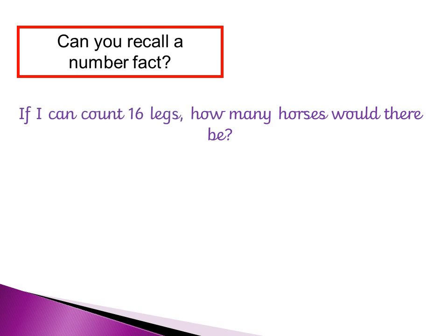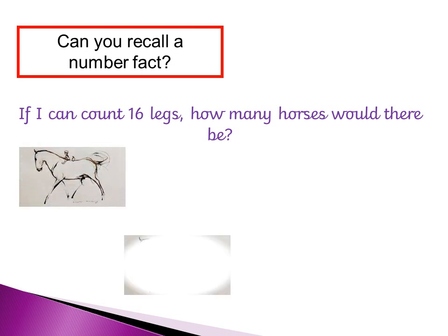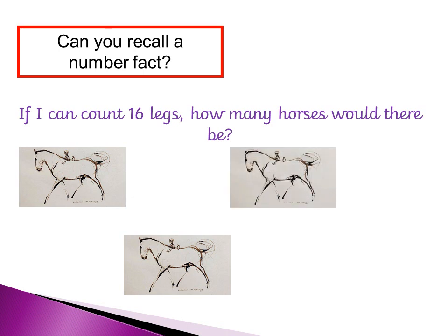Now things are going to get a little bit more tricky. If I can count sixteen legs, how many horses would there be? You might want to draw some pictures to help you. So: one horse has four legs, two horses eight legs, three horses twelve legs, four horses sixteen legs. So with sixteen legs, that's four horses. You might have done it by drawing pictures, or you might have done sixteen divided by four because each horse has four legs, and you would have got the answer four as well.